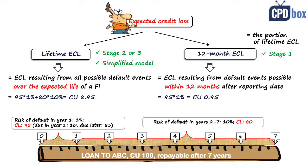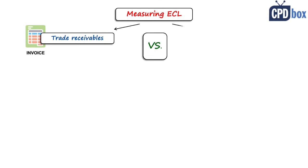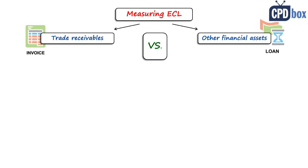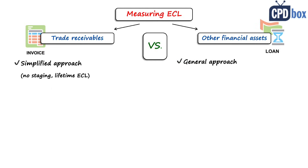Let me give some practical hints related to measuring expected credit loss, looking at trade receivables and how they differ from other financial assets like loans and bonds. The first main difference is that IFRS 9 requires the simplified approach for most trade receivables — meaning no staging, no analysis of how credit risk has changed, and you simply recognize lifetime expected credit loss. For most other financial assets like bonds or loans, you apply the general approach, meaning you determine the stage of the asset and then recognize either 12-month or lifetime ECL. So trade receivables are much easier to handle.